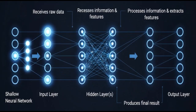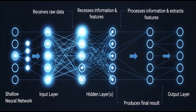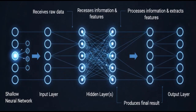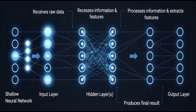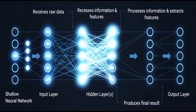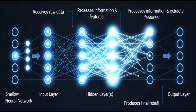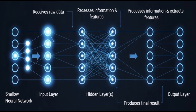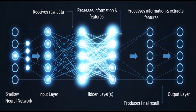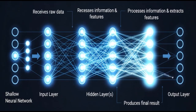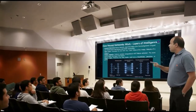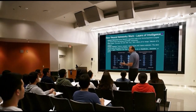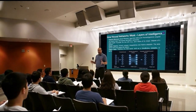The more hidden layers a network has, the deeper and often more capable it is of understanding intricate information. This layered structure, with information flowing from input through various stages of processing in the hidden layers to a final output, is what enables neural networks to perform such sophisticated tasks and mimic complex cognitive functions.